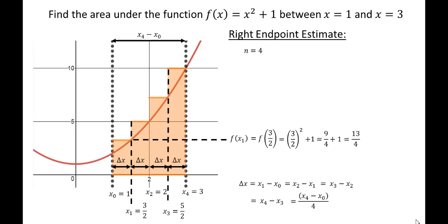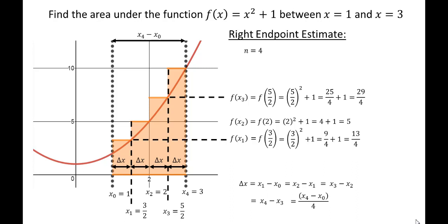Let's look at the heights of the other rectangles. f of x sub two equals 5, f of x sub three equals 29 fourths, and f of x sub four equals 10. So now we have the width and the height of each of our rectangles.